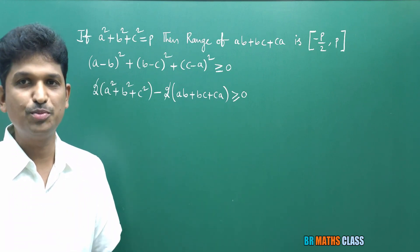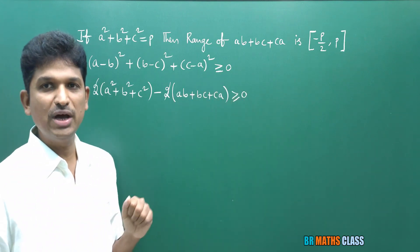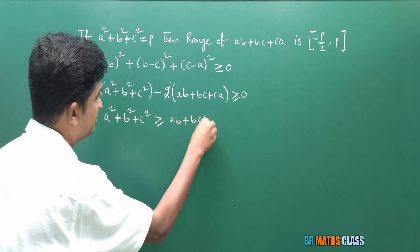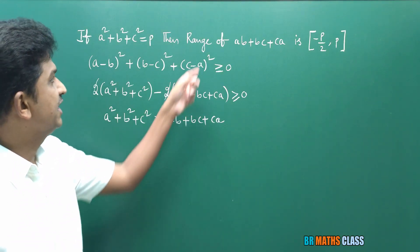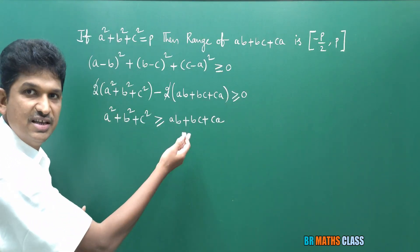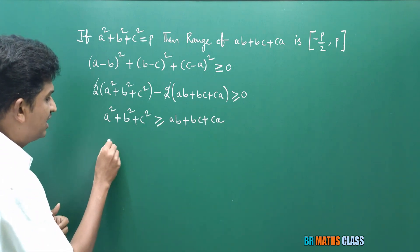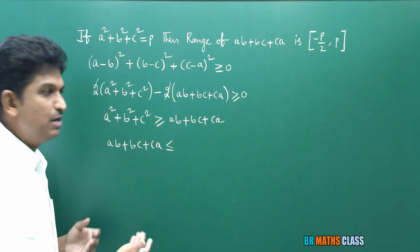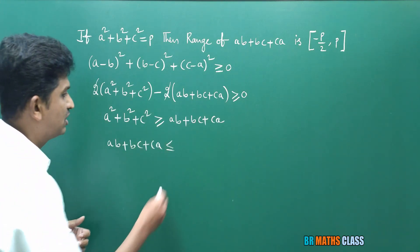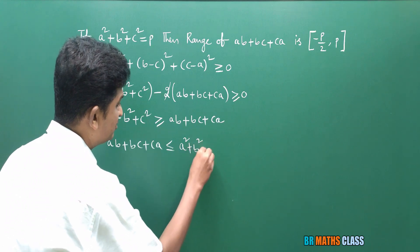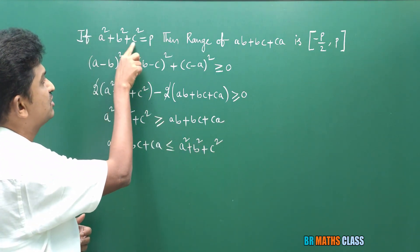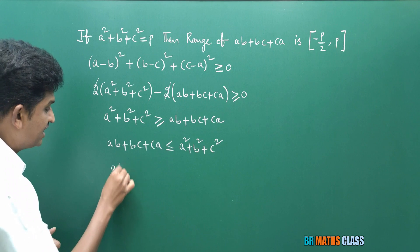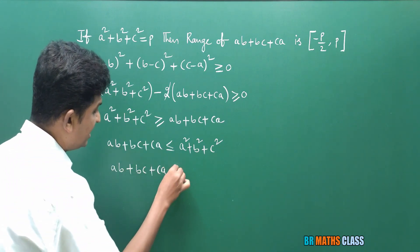This point will be used while doing the third problem. Taking AB + BC + CA to the other side gives: AB + BC + CA ≤ A² + B² + C². Writing from right to left, AB + BC + CA ≤ A² + B² + C². Since A² + B² + C² = P, we get AB + BC + CA ≤ P. Take this as condition one.